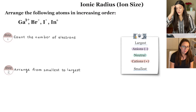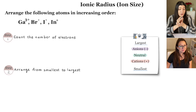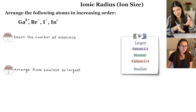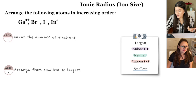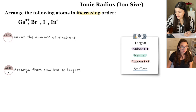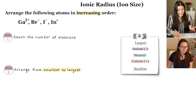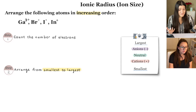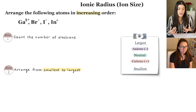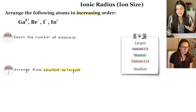Here's a typical exam question: arrange the following atoms in increasing order of ionic radius — smallest to largest. Before we can answer, we need to calculate the total number of electrons for each ion, because sometimes all the electrons are the same, which creates a trick question. For now, let's figure out the total electron count for each charged species.